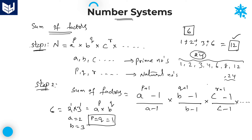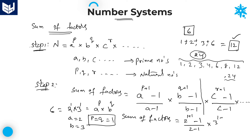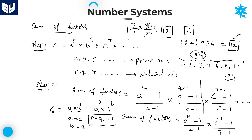Substitute all these values in the formula. Since we have only two prime numbers, we take up to b only. Sum of factors equals (2 power 1+1 minus 1) divided by (2 minus 1) into (3 power 1+1 minus 1) divided by (3 minus 1). That gives us (2 squared minus 1) over 1 into (3 squared minus 1) over 2, which is 3 over 1 into 8 over 2. Cancelling gives 3 into 4 equals 12. We get the same result — sum of factors is 12.